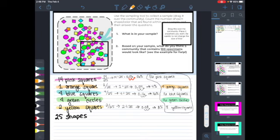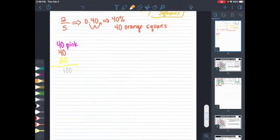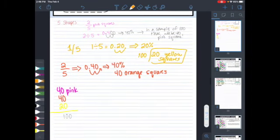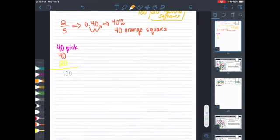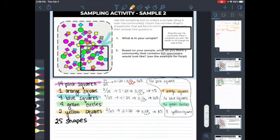However, this one, sample two, it's a much larger sampling space than sample one was. And so we can definitely see that sample two does give us a more accurate picture of the population as a whole than sample one does.